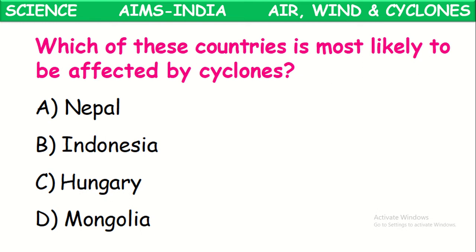Which of these countries is most likely to be affected by cyclones? The options are Nepal, Indonesia, Hungary, and Mongolia. Indonesia is on the sea shore — it is at the edge of the sea. So it will mostly get cyclones, being affected by them the most because it is near the oceans and seas.